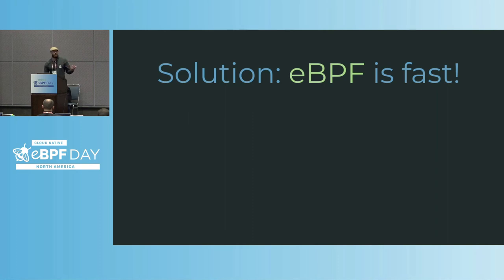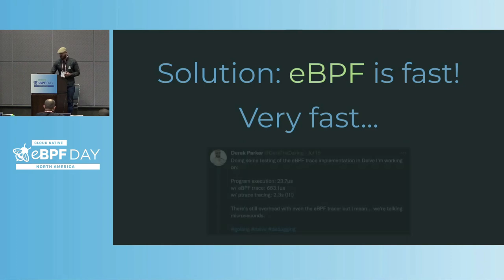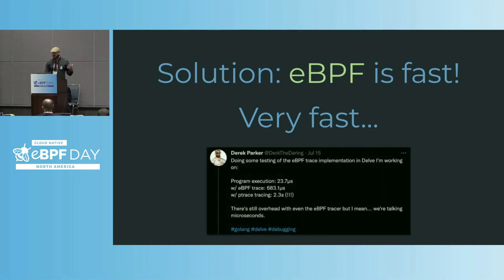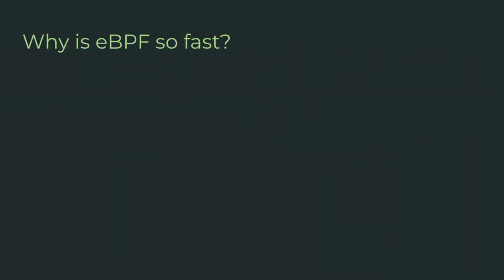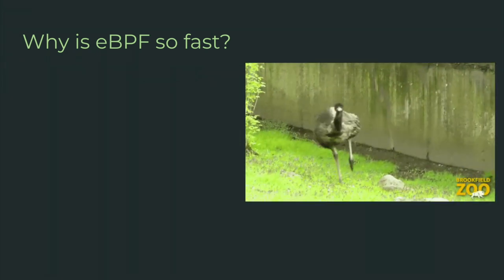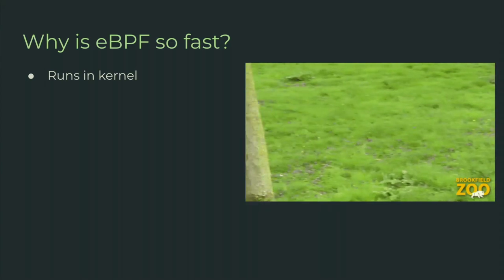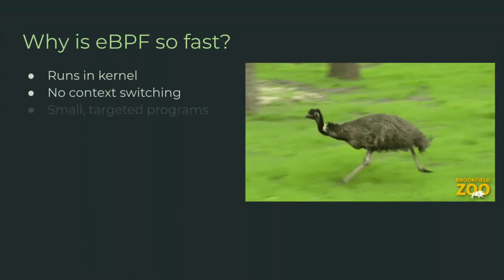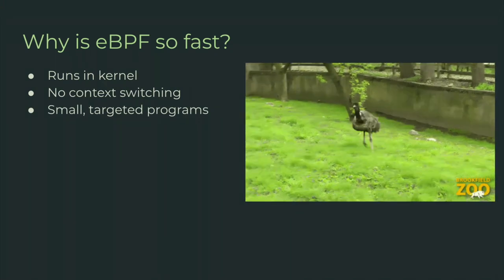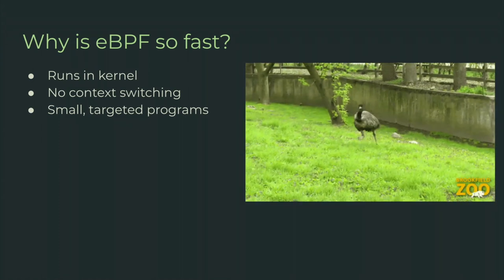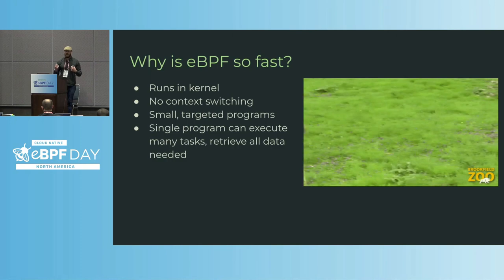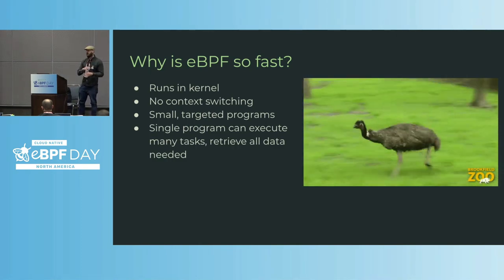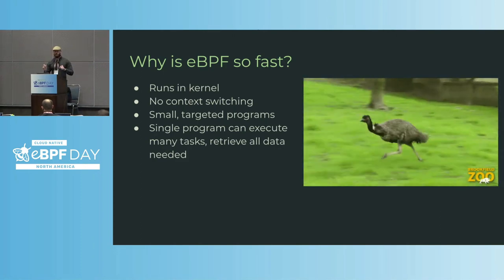Our solution is to use eBPF. Why do we have to do any of this context switching? We can do better — the technology is there. eBPF turns out to be very fast. When we look at the benchmarking, there is still some overhead, but in terms of other solutions we have right now, it's pretty negligible. eBPF is fast because it runs in the kernel — no context switching right out of the gate. eBPF programs are typically small, targeted programs, so their execution happens very quickly. A single stop can by itself gather all the data we need and send it back to user space without multiple points of context switching.